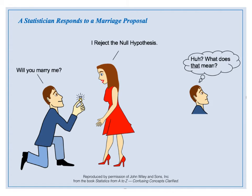Statistics is confusing, even for intelligent, technical people. Many people are confused by the difference between the two possible outcomes of a hypothesis test. These are: reject the null hypothesis, and fail to reject the null hypothesis. This video focuses on reject the null hypothesis. There is a separate video on fail to reject the null hypothesis. In both videos, we employ a marriage proposal scenario as part of our clarification of these two confusing concepts.